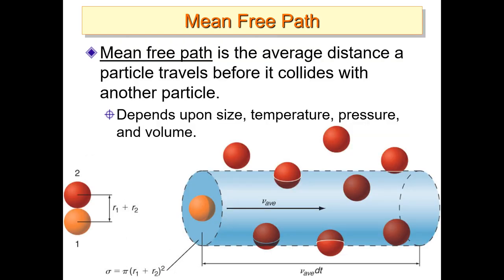We get into the transport chapter and some of the terms we use are the mean free path — the average distance a particle travels before it collides with another particle. Some are going to hit immediately; some are going to go a lot further than you might think. What's the average mean free path a particle would take at a given pressure, temperature, and particle size before it collides with something?